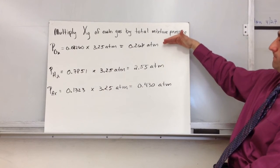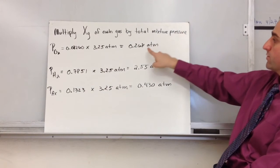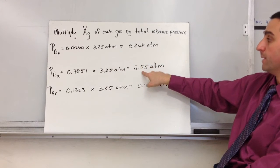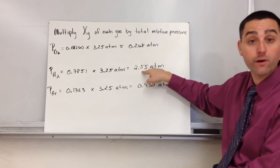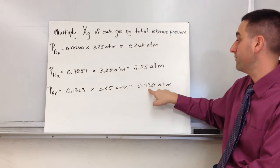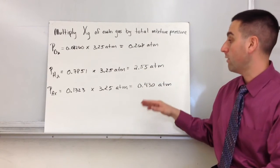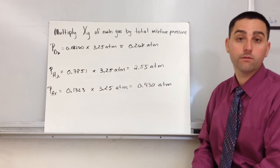And the answer here is this. Oxygen is exerting this much pressure: 0.268 atm. 2.55 ATMs are the partial pressure of hydrogen gas. And finally, 0.430 ATMs are the pressures for argon.